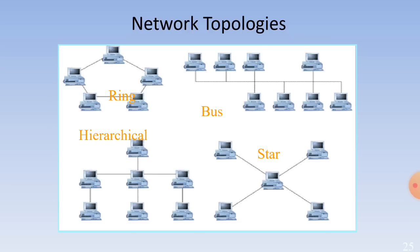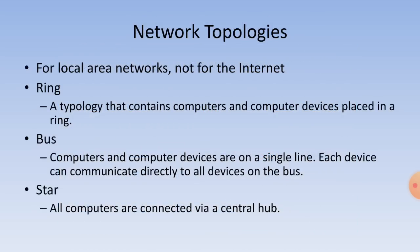Network topologies for local area networks: Ring — computers and devices are placed in a ring. Bus — computers and devices are on a single line, and each device can communicate directly with all devices on the bus. Star — all computers are connected via a central hub.